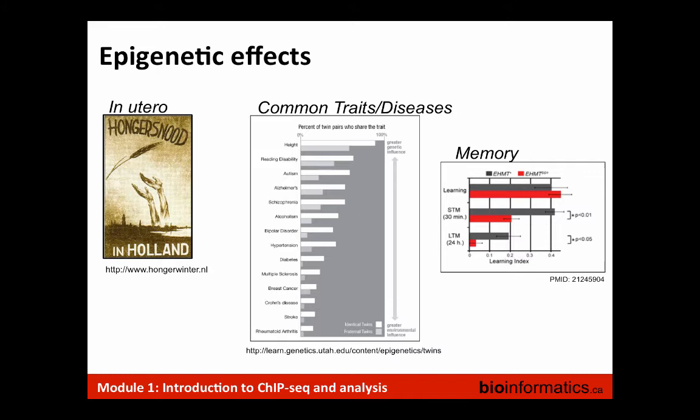Once we have this sheared set of fragments, we immunoprecipitate with an antibody specific for the histone modification of interest, which enriches for DNA fragments associated with nucleosomes carrying that modification. The original experiments by Bing Ren and others used ChIP-chip, probing a promoter or tiling array. That technology has been largely replaced by our ability to sequence those fragments directly. We take those fragments, strip off the proteins, generate a library — a collection of fragments with added DNA sequences that allow us to generate clusters — sequence them, align them to a reference genome, and build profiles of those modifications.